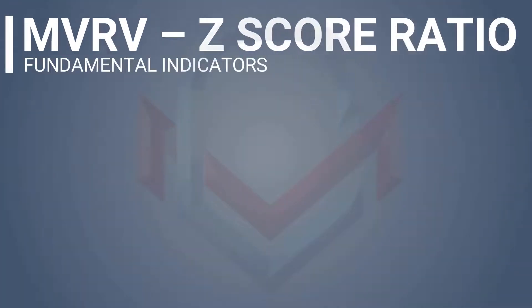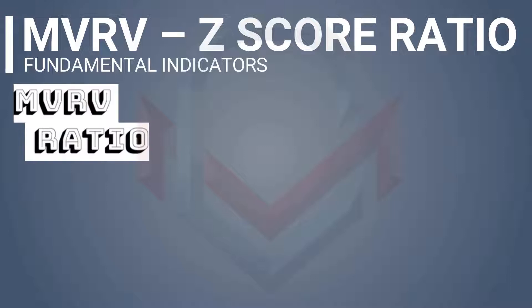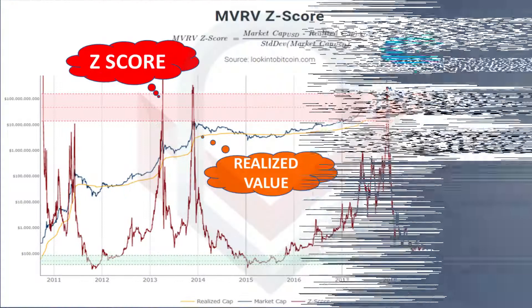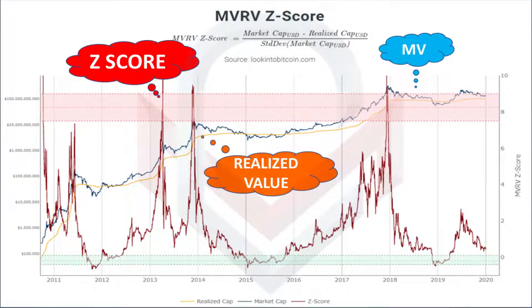Next, we will talk about the MVRV Z-Score. The MVRV ratio is a deep analysis tool. For the MVRV Z-Score, the MVRV represents market value shown as a blue line, and the realized value is shown as the orange line.